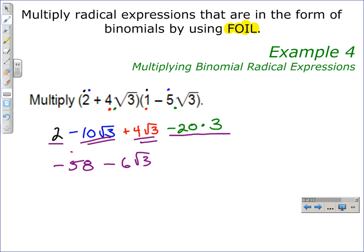So, after multiplying the two given radical binomials, we are left with negative 58 minus 6 square roots of 3. Remember, when you multiply radical expressions that are binomials to use the FOIL method to help keep you straight.